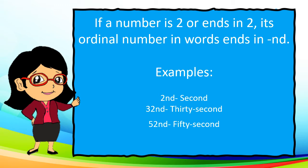If a number is 2 or ends in 2, its ordinal number in words ends in ND. For example, second — we add ND to number 2 since the last two letters of the word 'second' end in ND. We also have 32nd and 52nd.